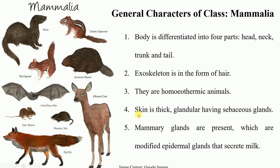The skin is thick, glandular, and provided with a sebaceous gland. The skin is quite thick in all mammals and is always provided with various kinds of glands. One important gland present in the integument of mammals is the sebaceous gland, which is concerned with the secretion of sebum. This is again a characteristic feature.